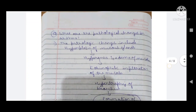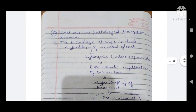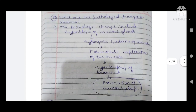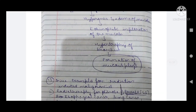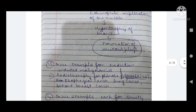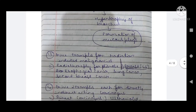Twelfth question: what are the pathological changes in asthma? Pathological changes include hyperplasia of mucous glands, hyperemia and edema of mucosa, eosinophilic infiltration of the mucosa, hypertrophy of bronchus, and formation of mucous plugs.